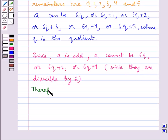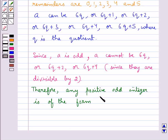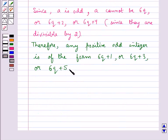Therefore, any positive odd integer is of the form 6q plus 1 or 6q plus 3 or 6q plus 5 where q is some integer.